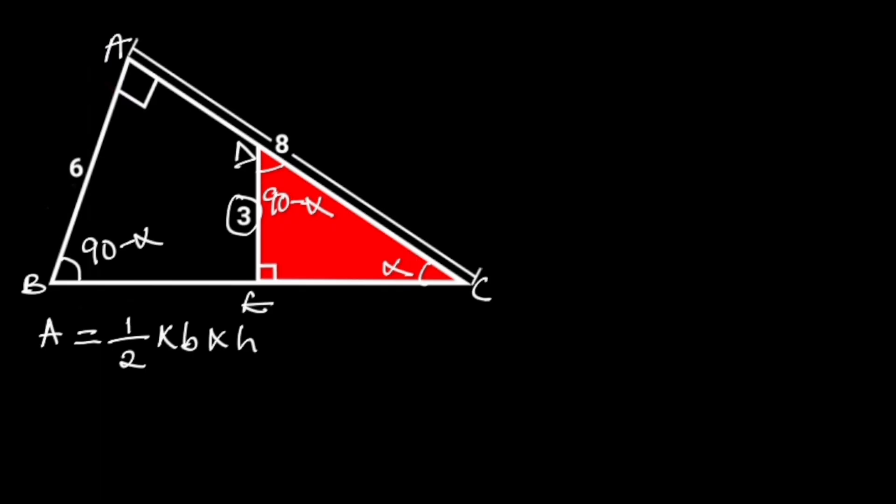Comparing triangle ABC and triangle CDE, observe that angle BAC is equal to angle DEC, angle ABC is equal to angle EDC, and angle ACB is equal to angle DCE. This shows that triangle ABC is similar to triangle CDE.